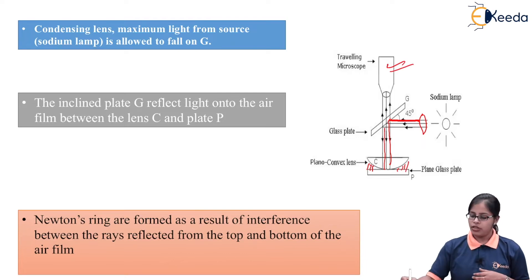Newton's rings are formed as a result of interference occurring between rays reflected from the top surface of the air film and the bottom surface of the air film. Between the plano-convex lens and the glass plate there is an air film, and the light incident normally on it undergoes reflection from both top and bottom surfaces. These two reflected rays interfere with each other, leading to the formation of an interference pattern in the form of Newton's rings.